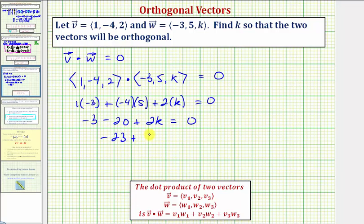-23 + 2k = 0. Adding 23 to both sides, we have 2k = 23. Dividing both sides by 2, we get k = 23/2.